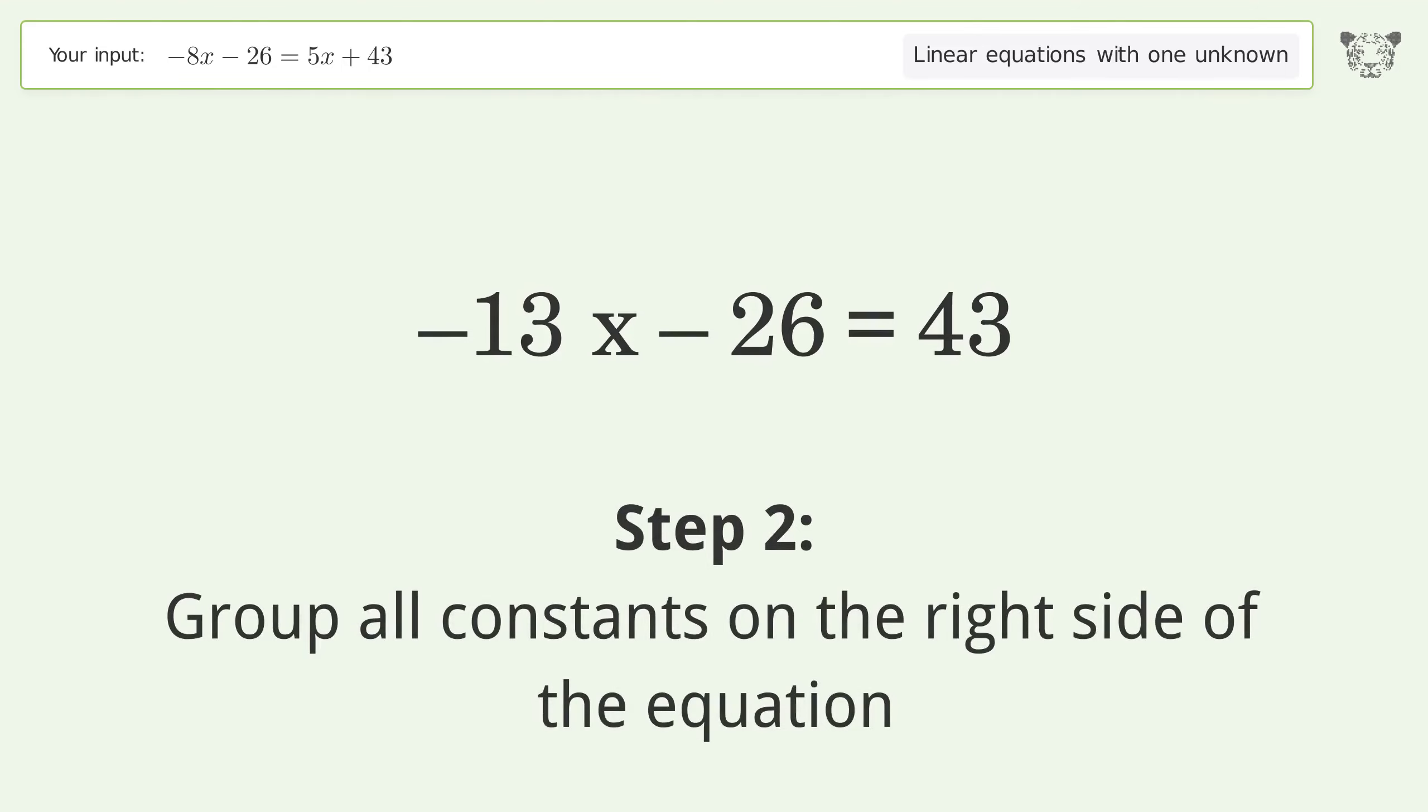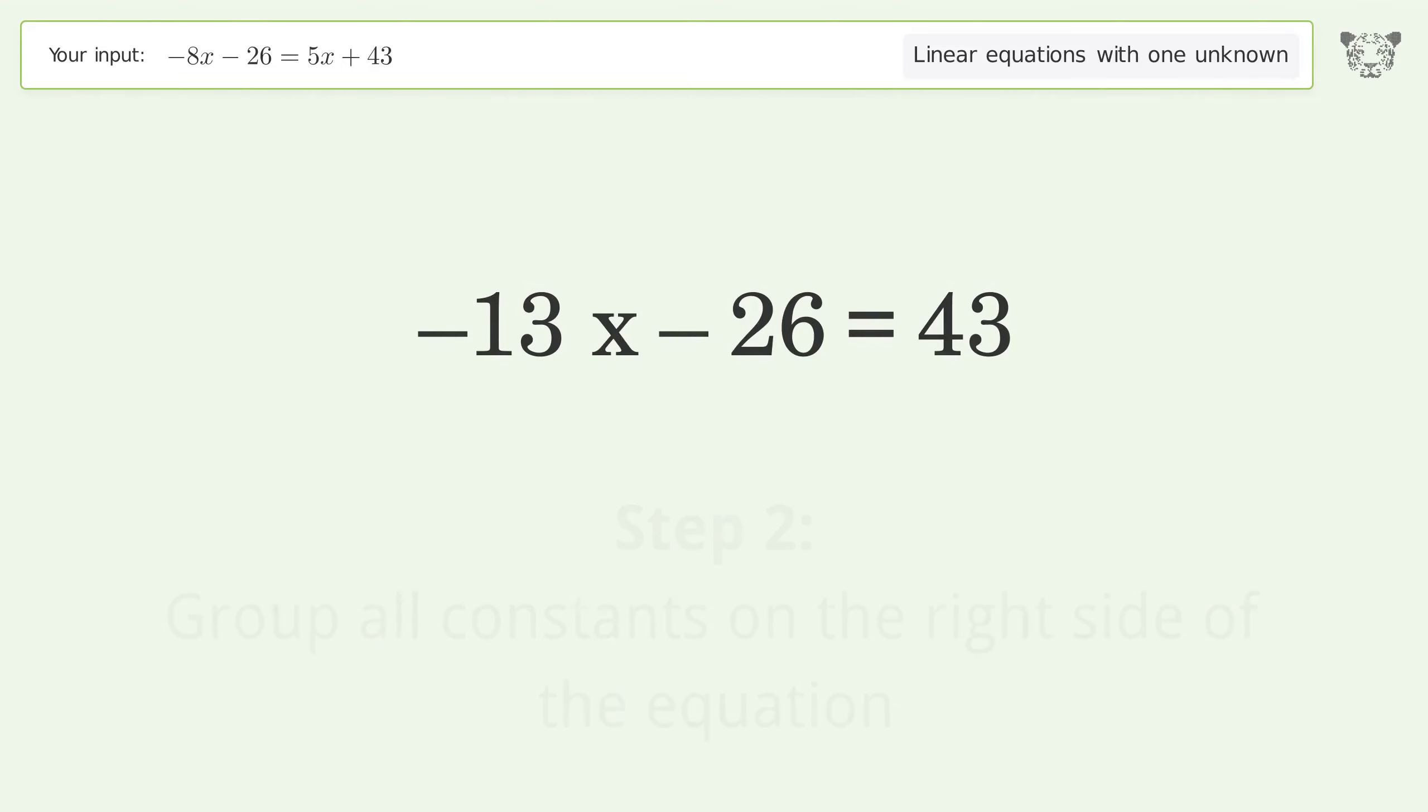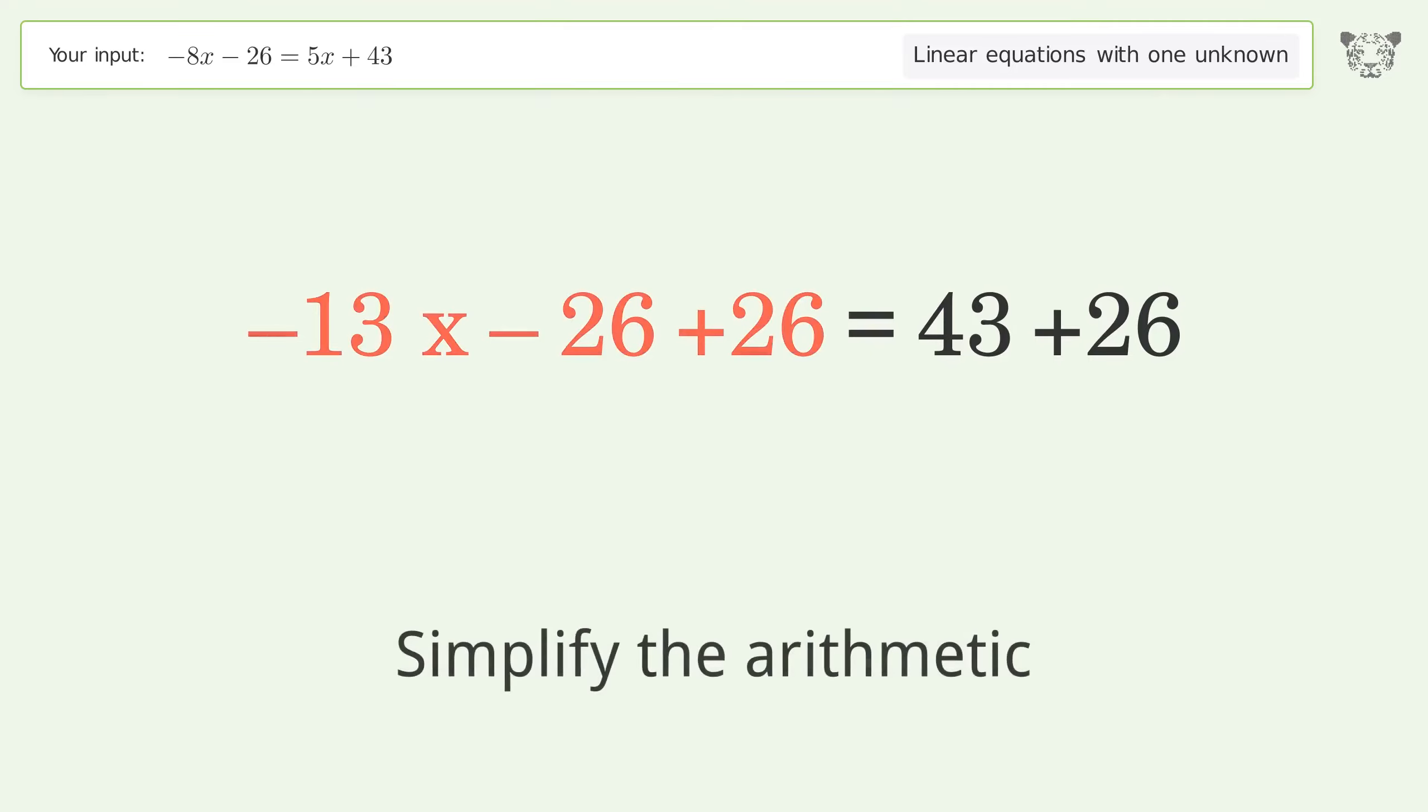Group all constants on the right side of the equation. Add 26 to both sides. Simplify the arithmetic.